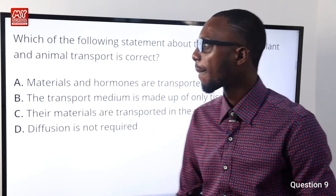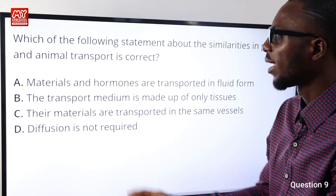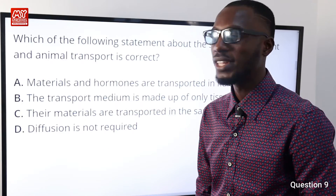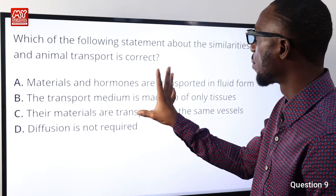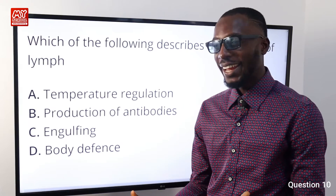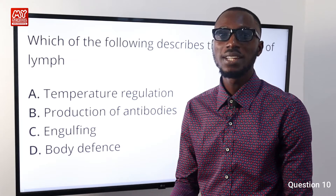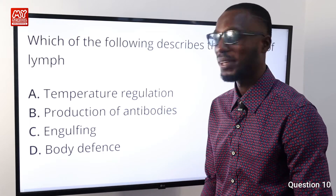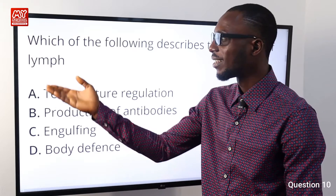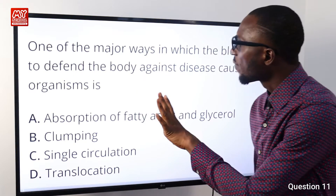Question number nine: which of the following statements about the similarities in plant and animal transport is correct? Option A states that materials and hormones are transported in fluid form — this is the only similarity from the options that fits, because materials and hormones are transported in fluid form both in plants and animals. So option A is correct. Question number ten: which of the following describes the function of lymph? Remember that lymph fluid contains white blood cells which defend the body against intrusion by invaders. So option D, body defense, is the major function of lymph. Option D is correct.